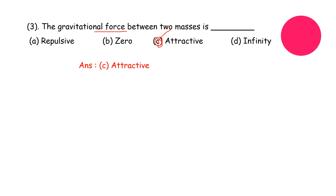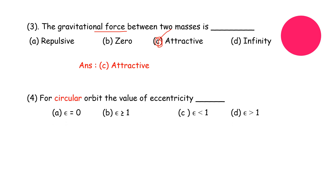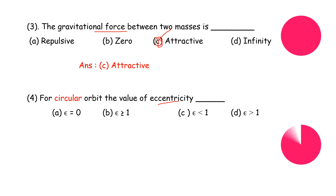The next question: for a circular orbit, what is the value of eccentricity? The correct answer is that eccentricity epsilon is equal to zero.